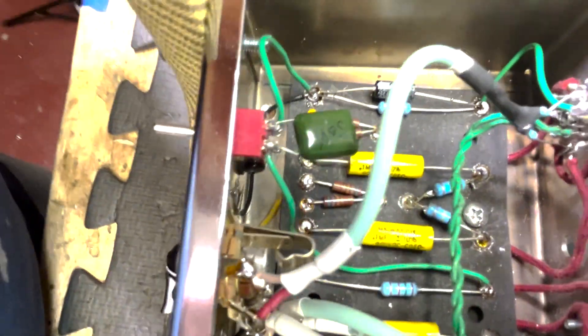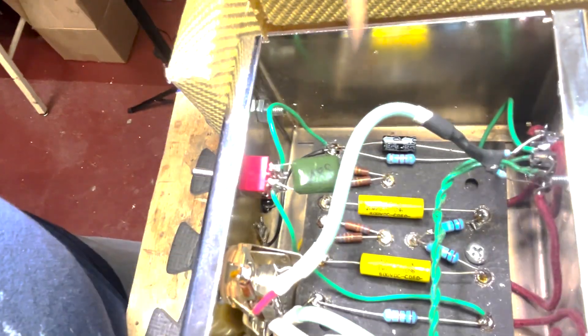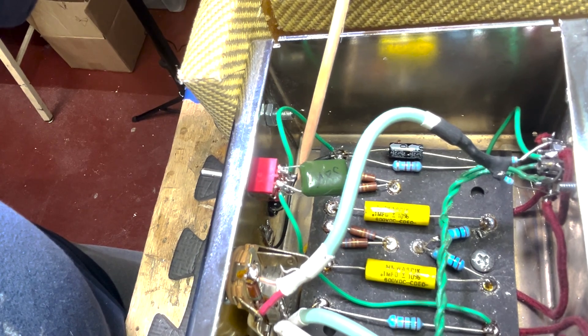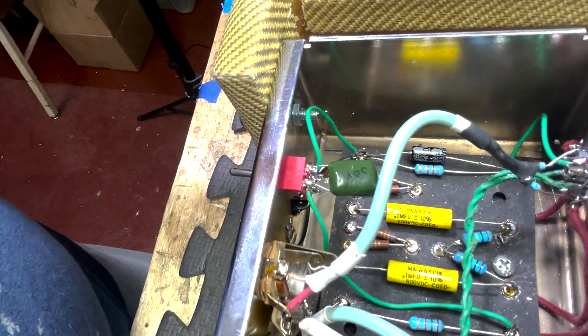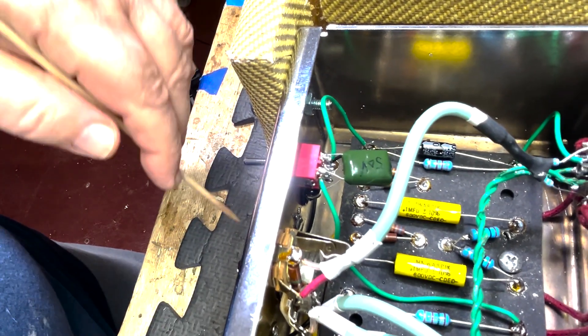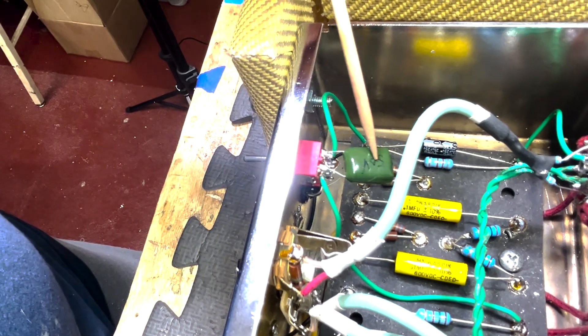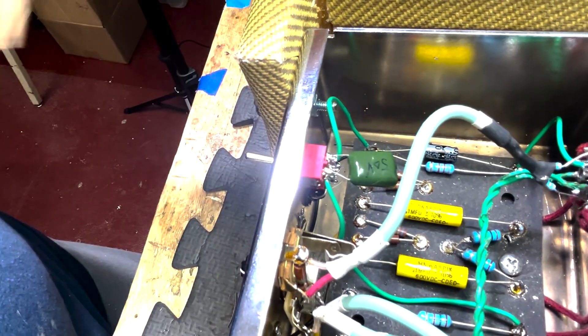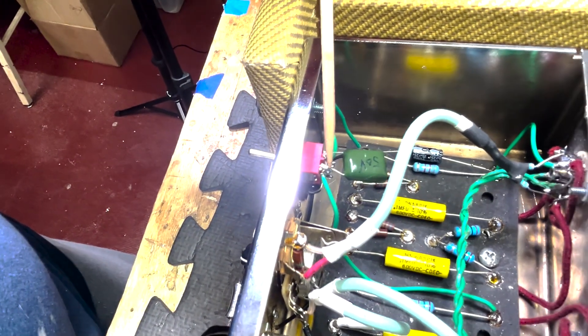The switch just switches between no bypass cap in the center. If you put the switch towards the front of the amp, you're selecting the 0.22, and if you put it this way, it's full 5V3.